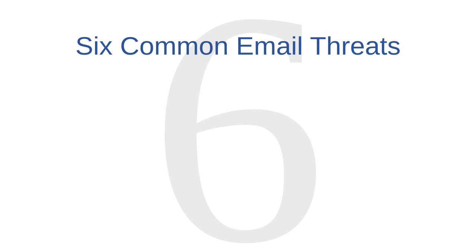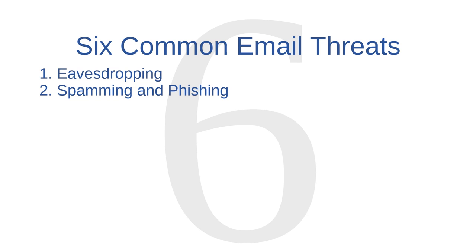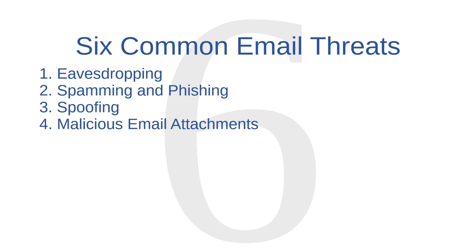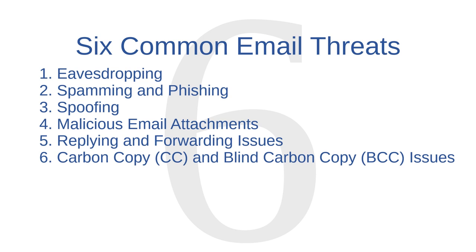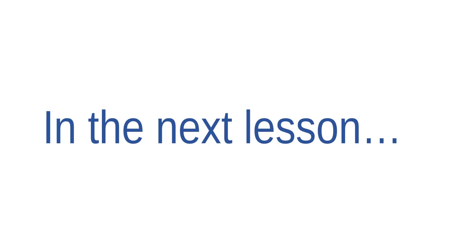That's all for now about email security. In this lesson, we covered six email threats: eavesdropping, spamming and phishing, spoofing, malicious email attachments, replying and forwarding issues, and carbon copy and blind carbon copy issues. In the next lesson, we're going to start learning about malicious software, or malware. Computer viruses are one example of malware, but as you're about to see, viruses aren't the only kind of malware that can infect your computer.